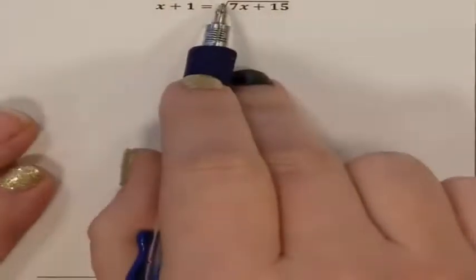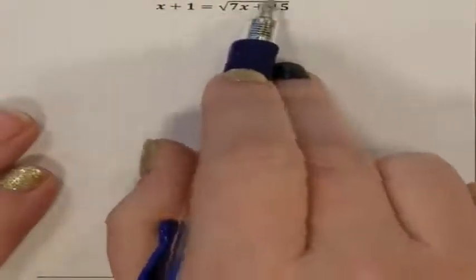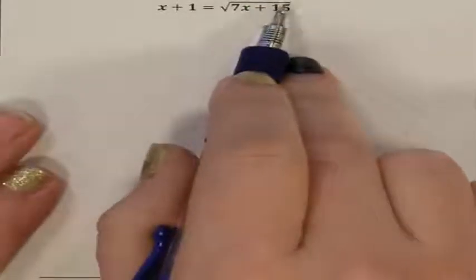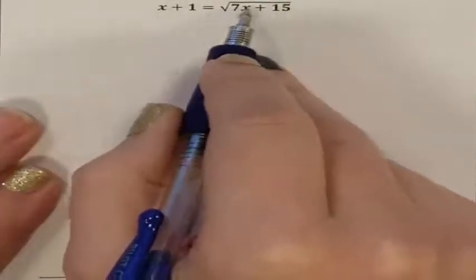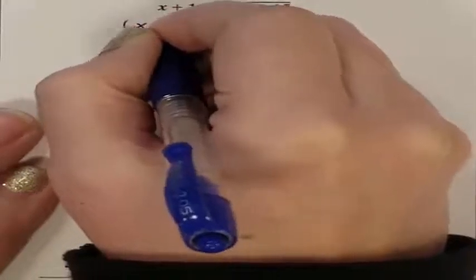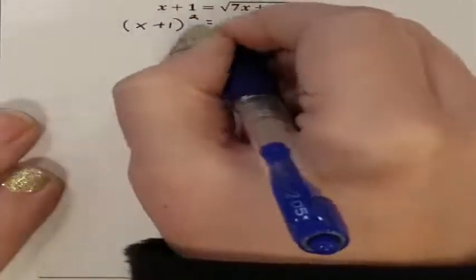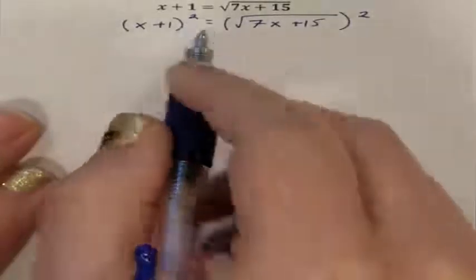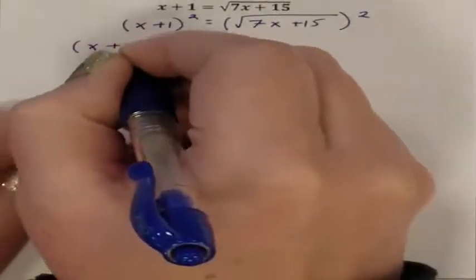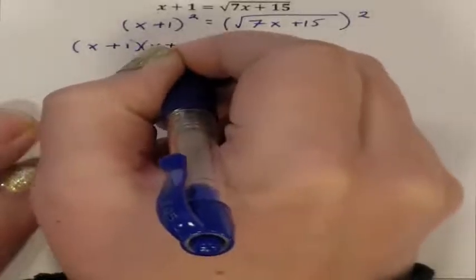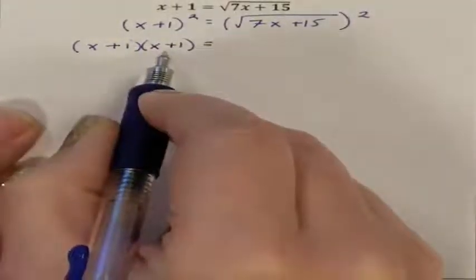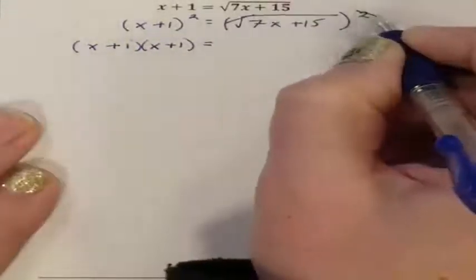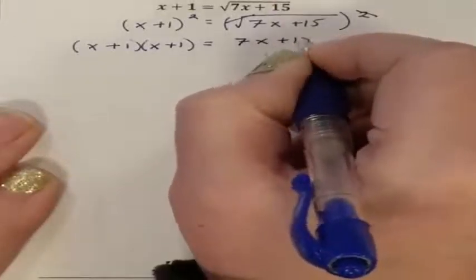I need to get inside this radical so I can start moving things around. I can't do that until the radical is gone. So I need to take the second power of both sides. The square root and the second power cancel each other out, so this is 7x plus 15.